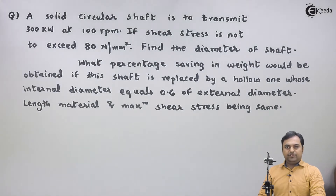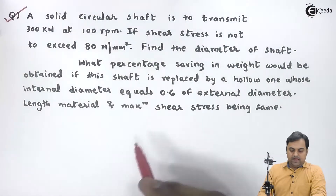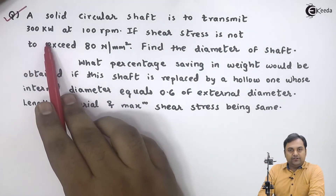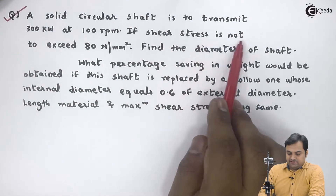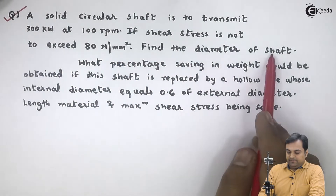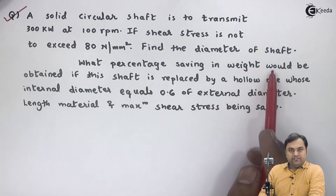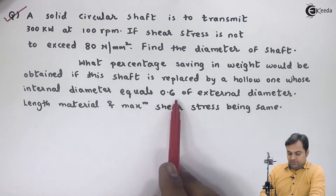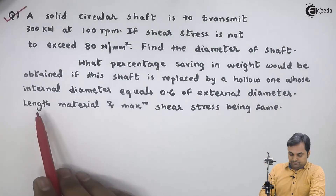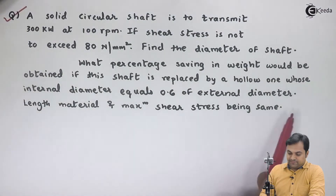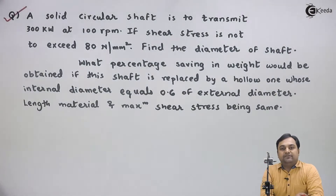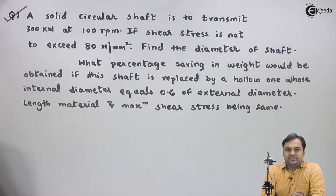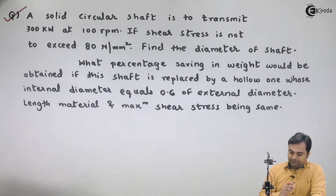Hello students, let us take a new question in the topic of torsion. A solid circular shaft is to transmit 300 kilowatts at 100 rpm. If shear stress is not to exceed 80 Newton per mm square, find the diameter of the shaft. What percentage saving in weight would be obtained if this shaft is replaced by a hollow one? First there is a solid shaft, then it is replaced by a hollow shaft, and we have to find how much is the percentage saving in weight.